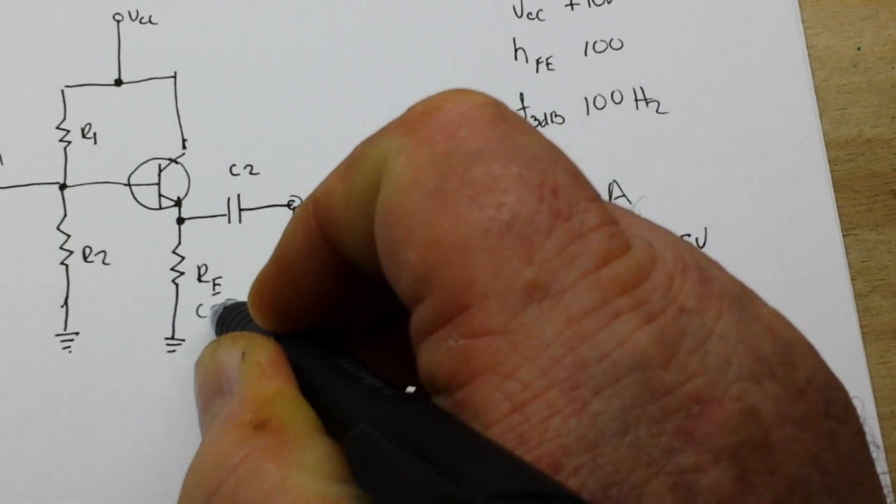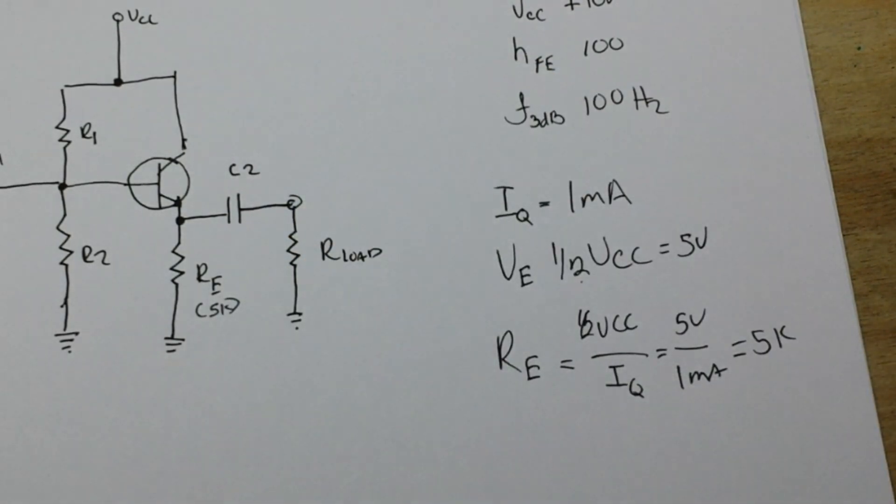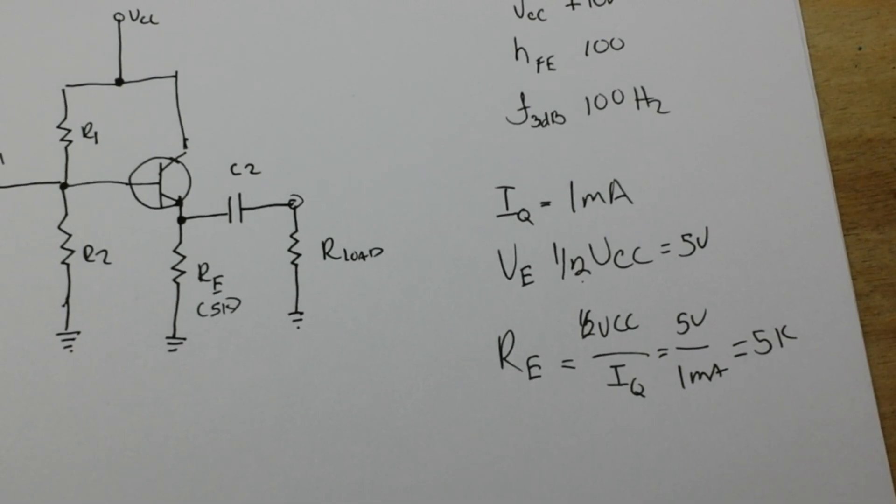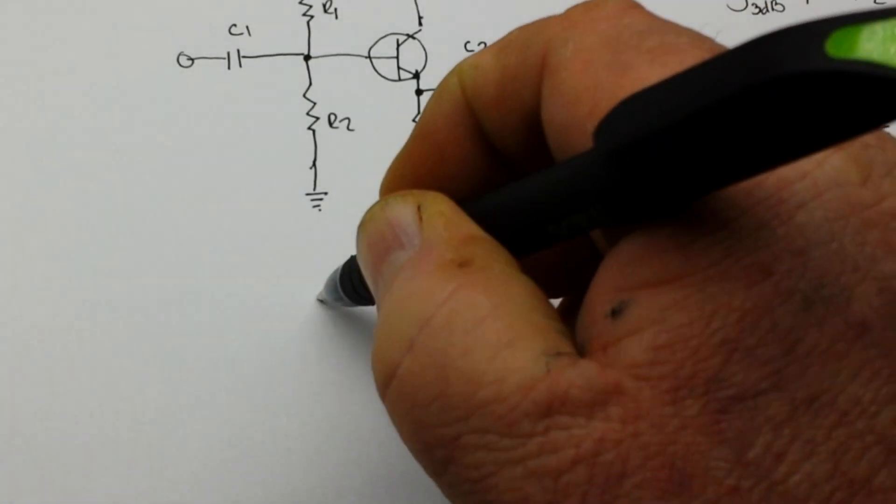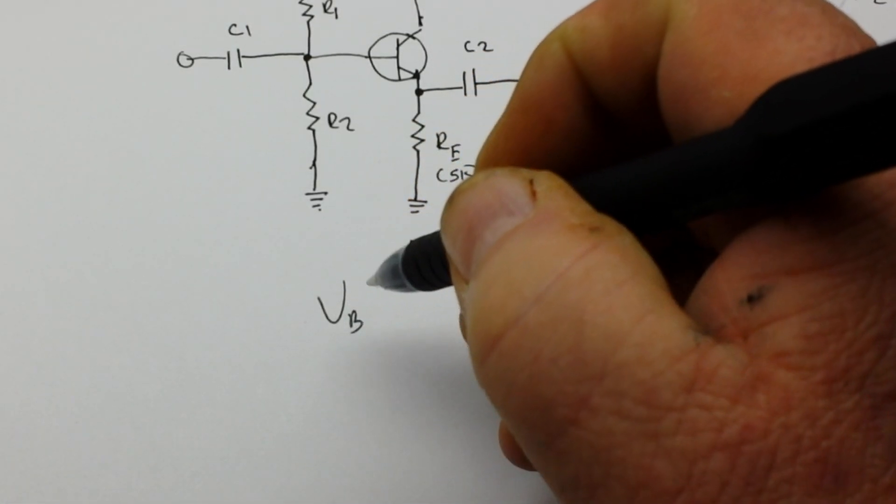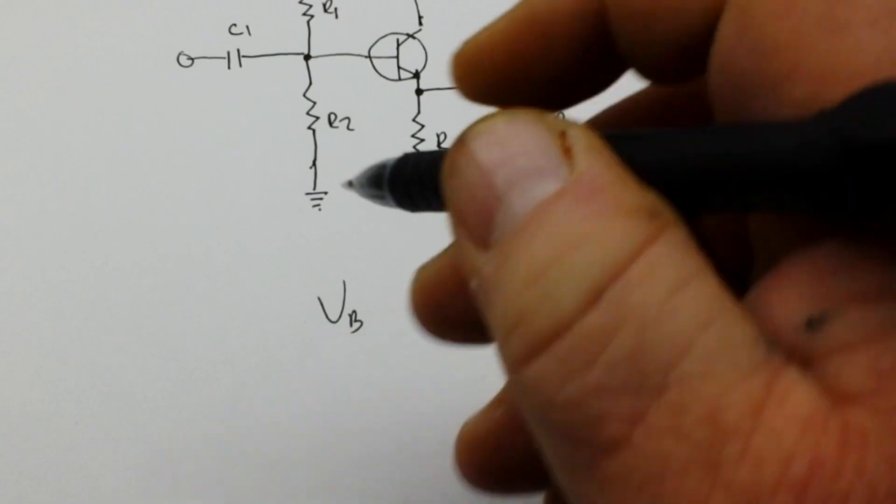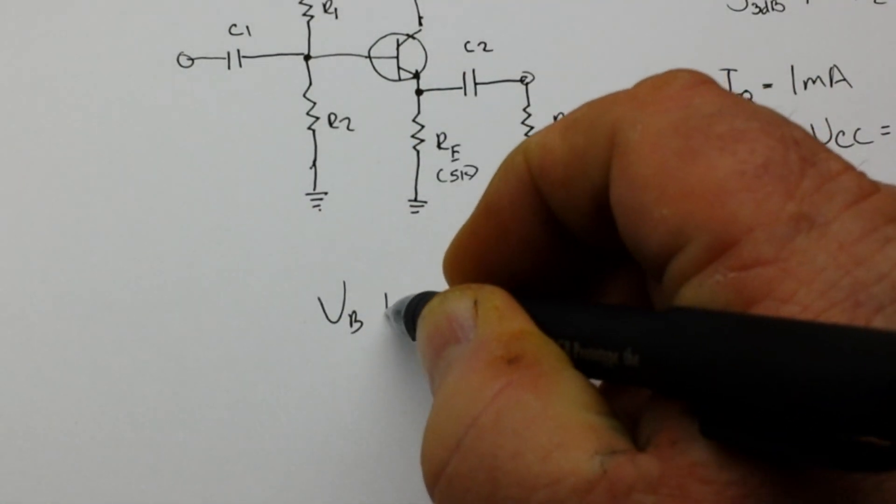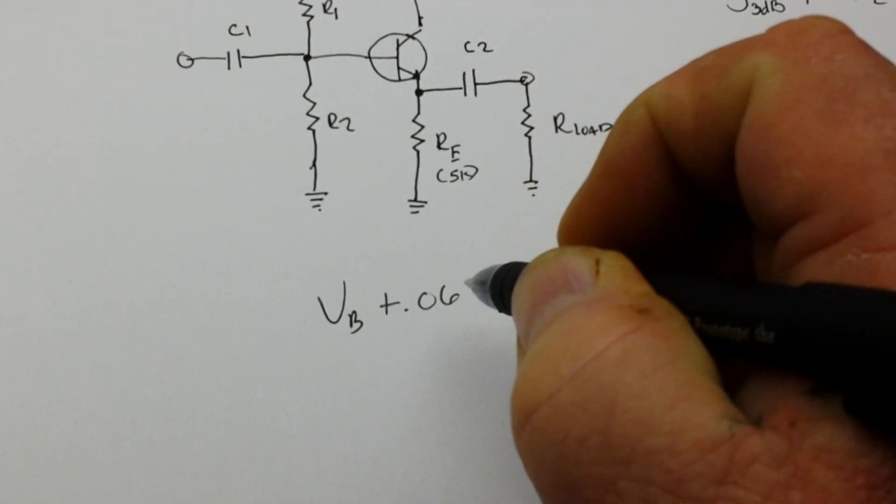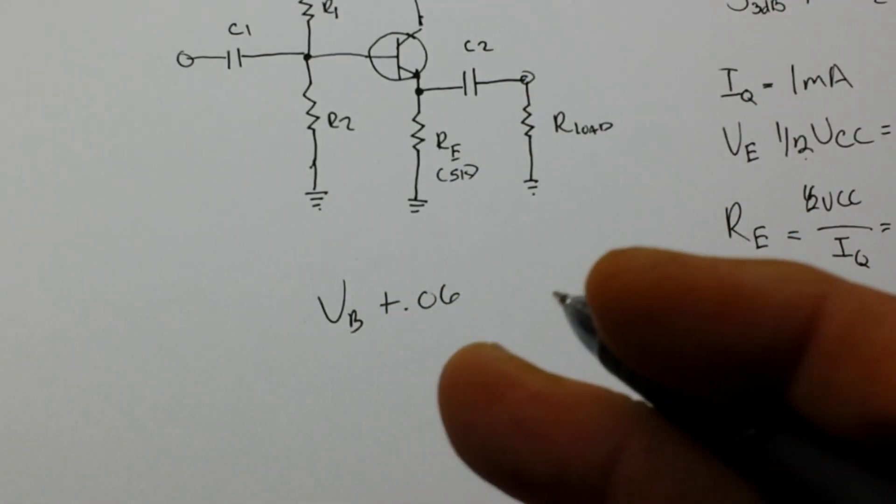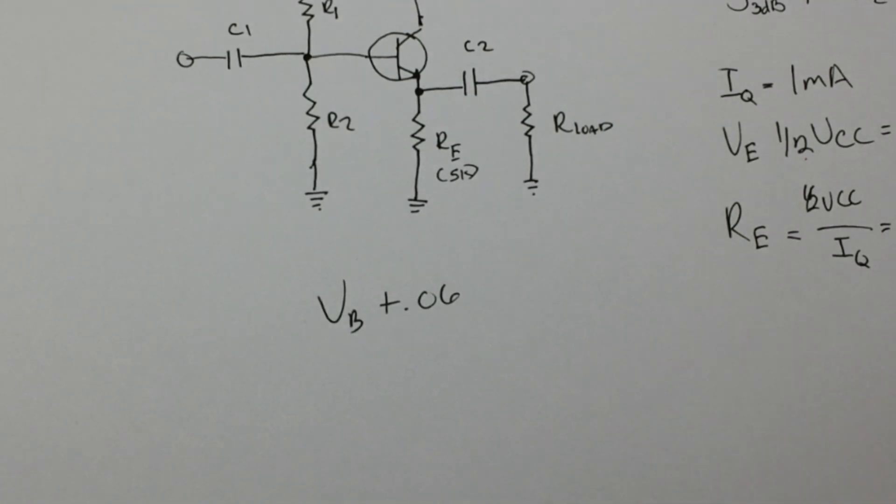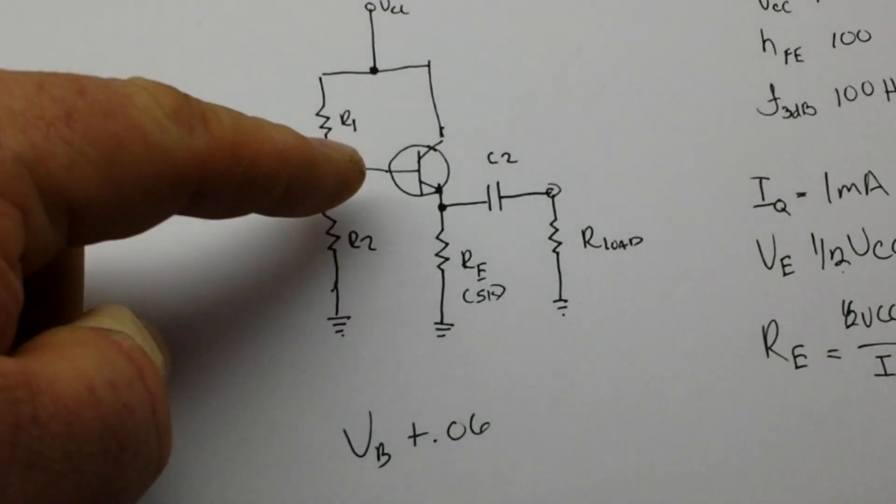And that is step one. For step two we need to set VB, our voltage at the base. Now our voltage at the base will be plus 0.6 for our quiescent conditions to match up. Now we can use a voltage divider and that's what we're going to do.